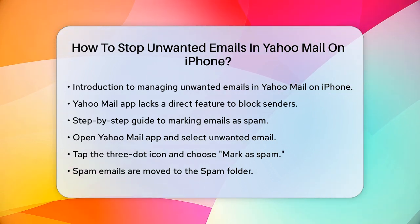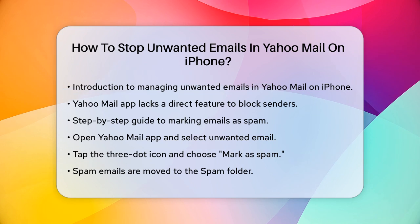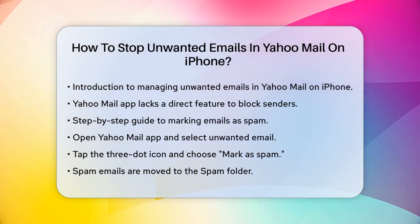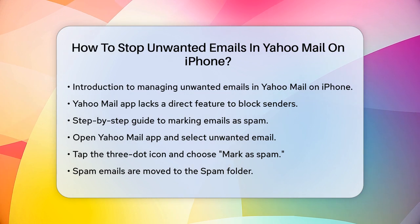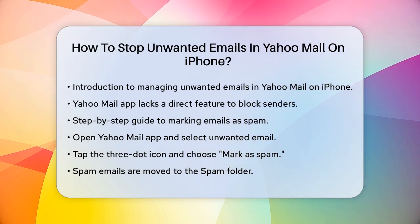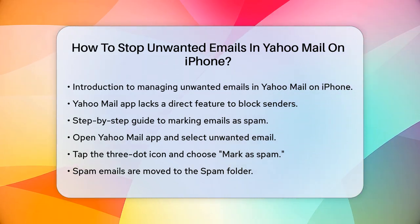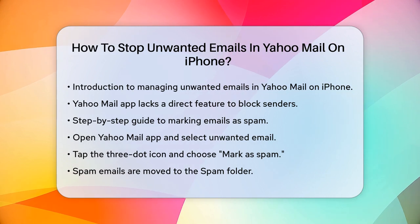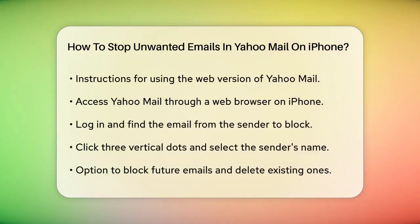One of the simplest ways to handle unwanted emails is to mark them as spam. Here's how you can do it. Open the Yahoo Mail app on your iPhone. Go to your inbox and select the unwanted message by tapping the empty checkbox on the left. Once you've selected the message, tap the three-dot icon, More, at the top right corner of the screen. Choose Mark as spam from the options.